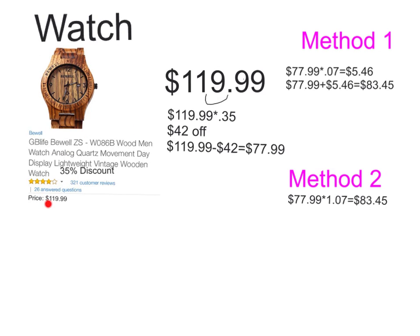For my third item, I chose a $119.99 watch with a 35% discount. To calculate the 35% discount, you're going to multiply $119.99 times .35, which gives you $42 off. So then you're going to subtract $42 from $119.99, which gives you a $79.99 discounted price.